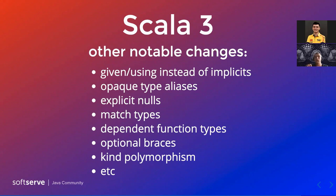Explicit nulls is available in Scala 3 as a compiler flag. When enabled, it restricts you from assigning null or nullable values to non-nullable variables — similar to Kotlin's null safety. For example, if you have a variable of type String, you cannot assign null to it. It's possible by default in Scala 2 and also by default in Scala 3, but with this flag it won't be. It will only be possible if you explicitly declare your type as nullable using a union type — for example, `String | Null`.